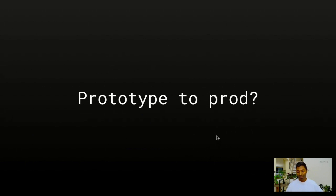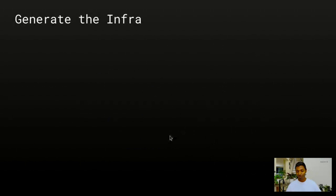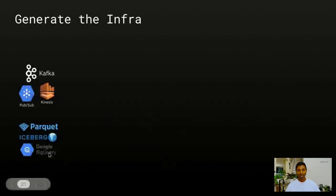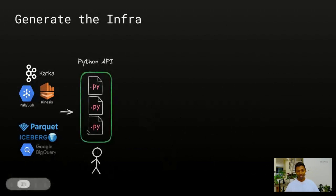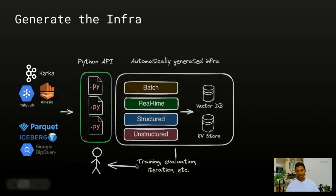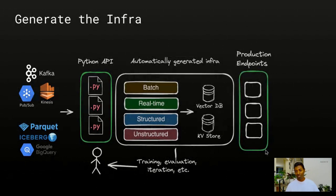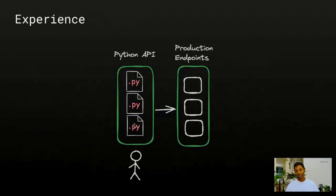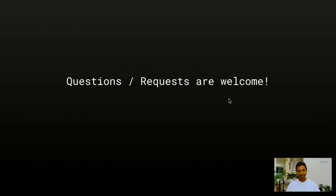The goal is to make ML systems not hand-built. From a user's point of view, they define their computation over their raw data, we generate the infrastructure, and users use that to train models, evaluate them, and iterate quickly. Finally we expose production endpoints that serve applications. From a user experience point of view, it looks like they've written some Python code and they're able to get to production endpoints without any intermediate team building systems.